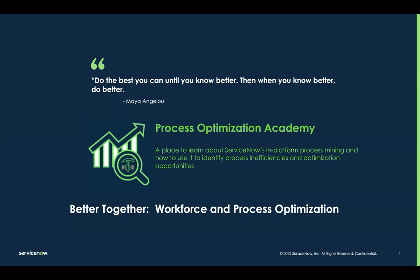In addition to the connection with workforce optimization that we'll be covering today, process optimization has ties to things like performance analytics, continual improvement management, automation center, and predictive intelligence — all of which are key to creating a more efficient closed-loop continual improvement experience. We're going to be covering some of those other connections in future Academy sessions, so look forward to those.